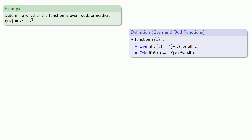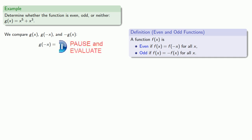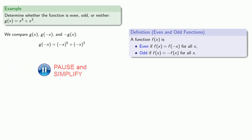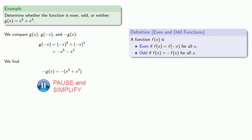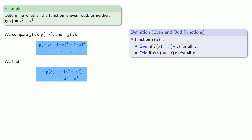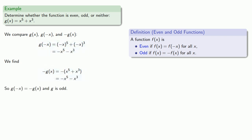Or how about this function? We'll compare g of x, g of negative x, and negative g of x. So we'll find g of negative x and simplify. And this is not g of x, so we'll find negative g of x and simplify. We see that g of negative x and negative g of x are the same thing. And so g of negative x equals negative g of x, and g is odd.